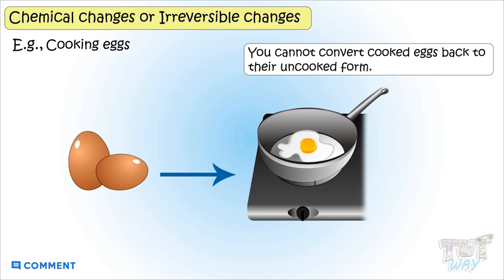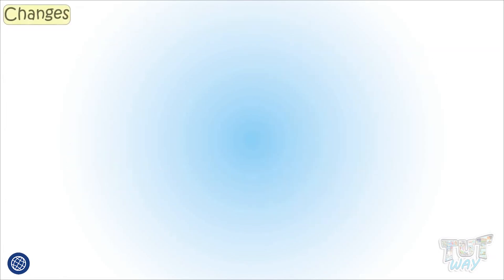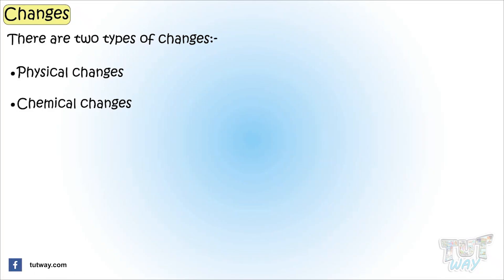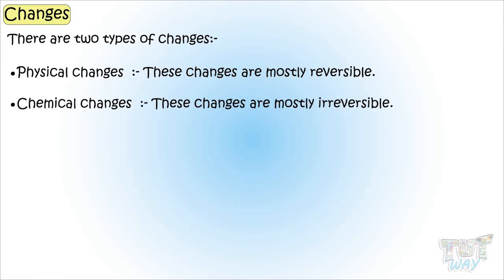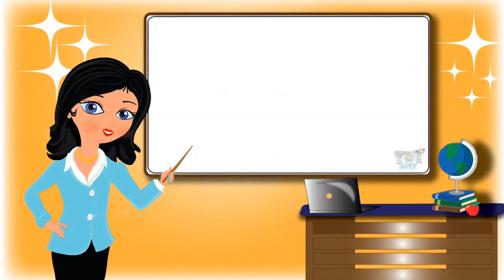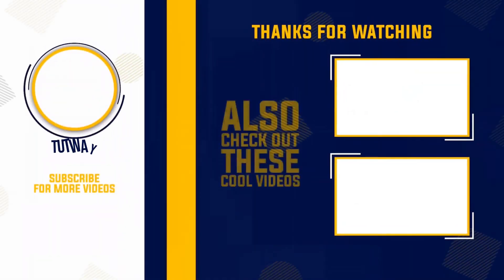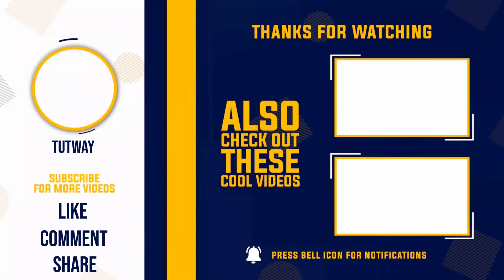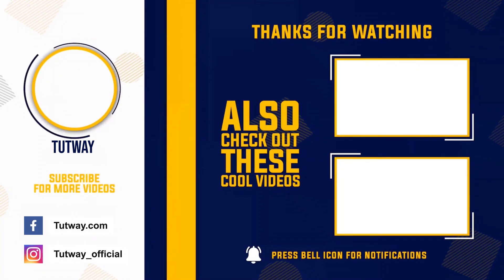So kids, today we learned two types of changes: physical changes and chemical changes. We also learned that physical changes are mostly reversible and chemical changes are irreversible. Now you may go ahead and take a quiz to learn more. Bye-bye, thank you so much for watching! Don't forget to like, comment, and share this video. If you want to see more fun videos, hit that subscribe button. You can also follow us on Facebook and Instagram for more content.